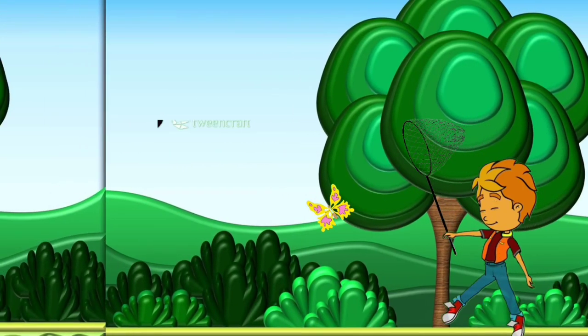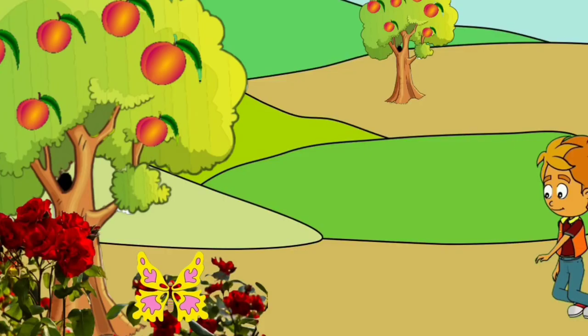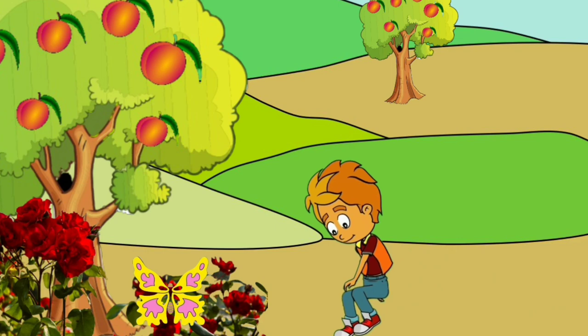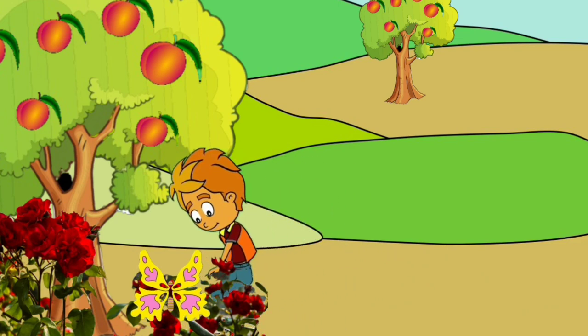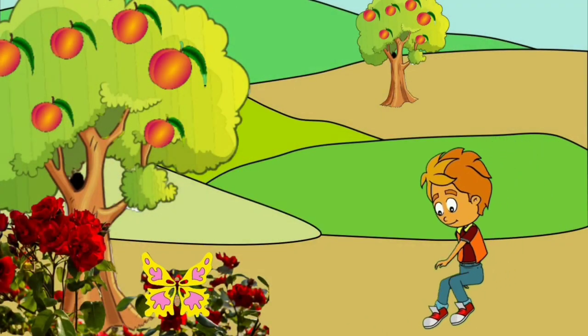The butterfly flew to the rose bed. It sat on a red rose. 'Now I can catch it,' said Sonu. He walked slowly and silently to catch the butterfly.